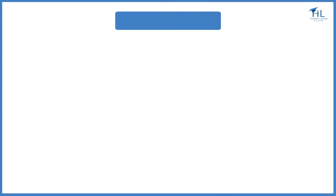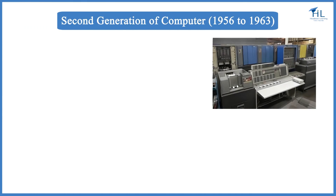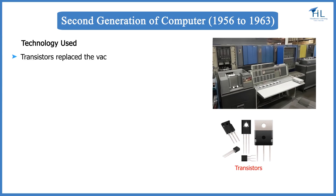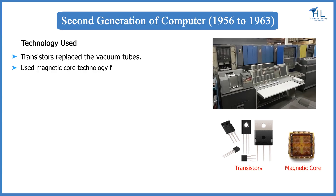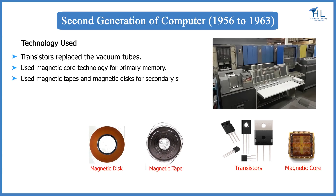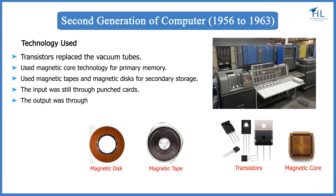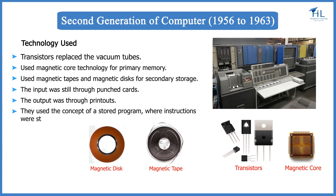Next came the second generation of computers, from 1956 to 1963. In the second generation, transistors replaced the vacuum tubes. Transistors allowed computers to become smaller, faster, cheaper, energy efficient, and reliable. The second generation computers used magnetic core technology for primary memory, and magnetic tapes and magnetic disks for secondary storage. The input was still through punch cards and the output using printouts. They used the concept of a stored program, where instructions were stored in the memory of a computer.